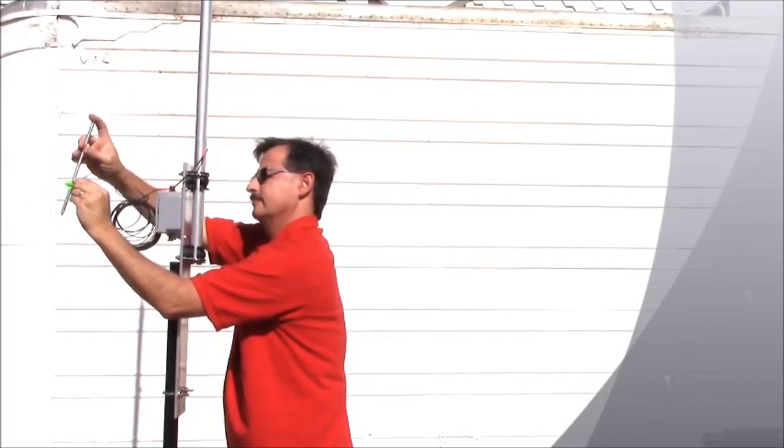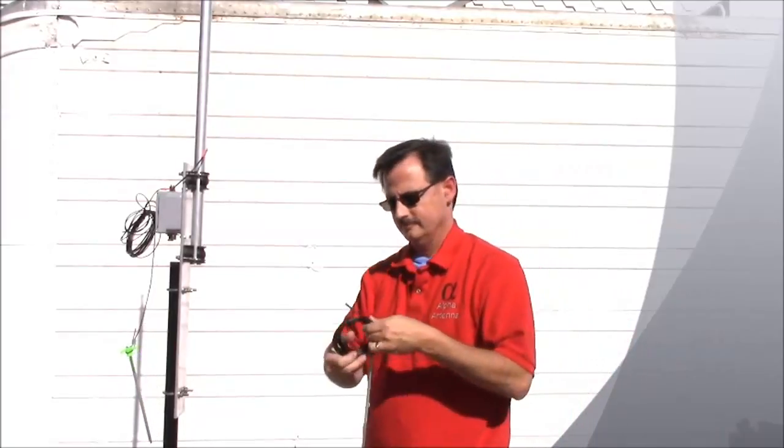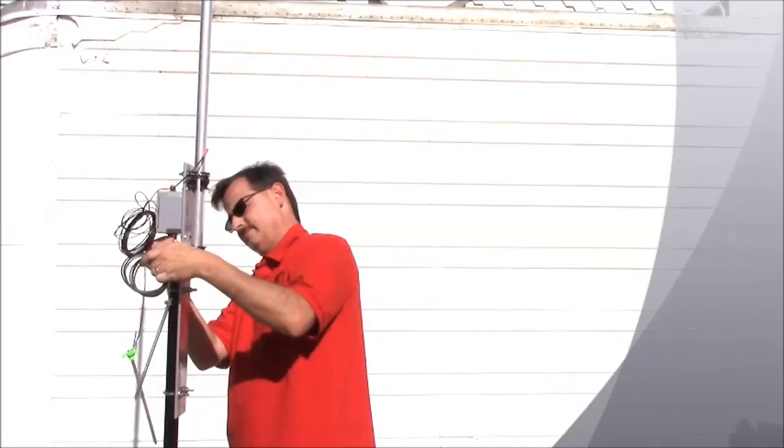The stake on the distal end of the NVIS element can be removed and secured on the other end with the insulator or use the stake to push it into the ground and use it as a sloper.